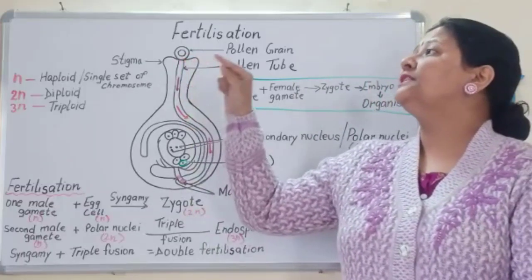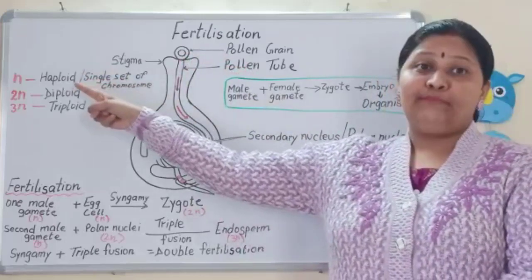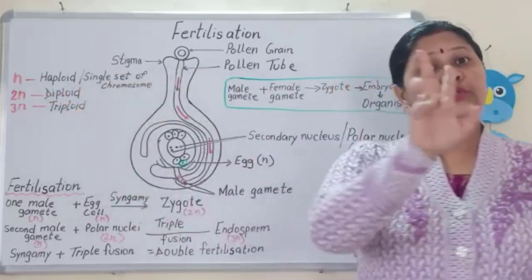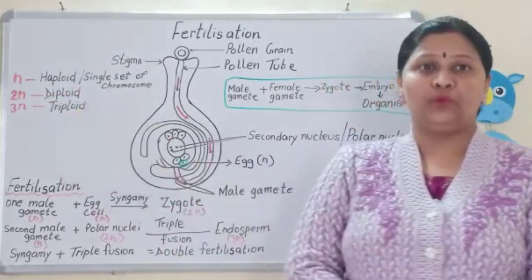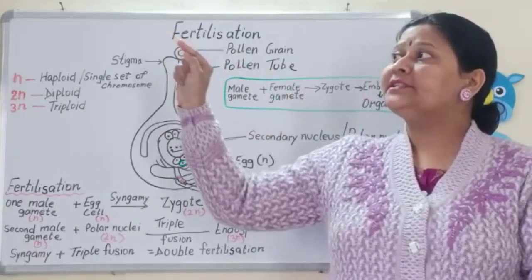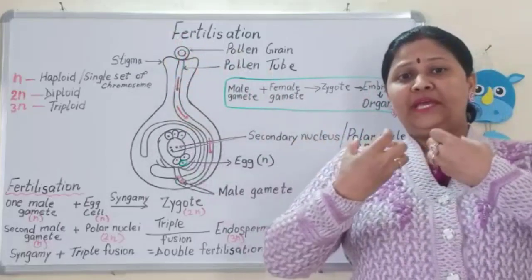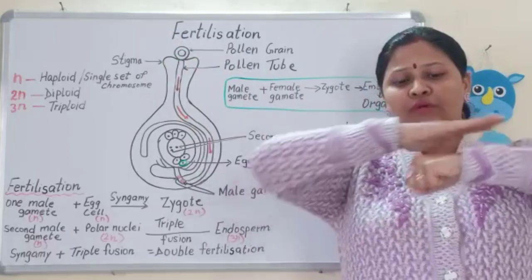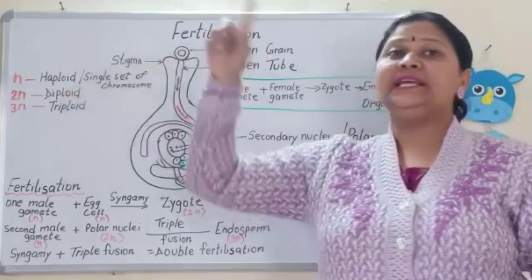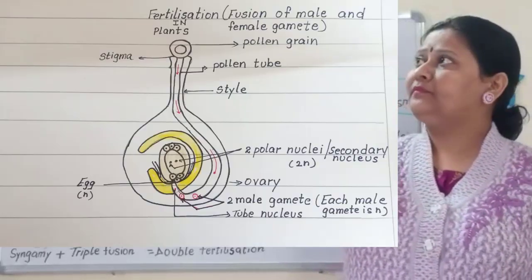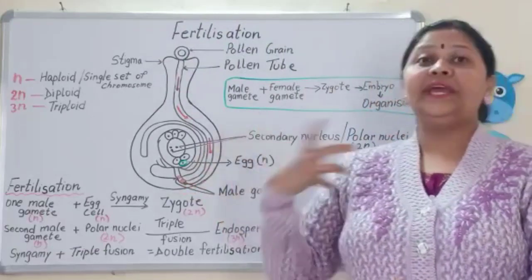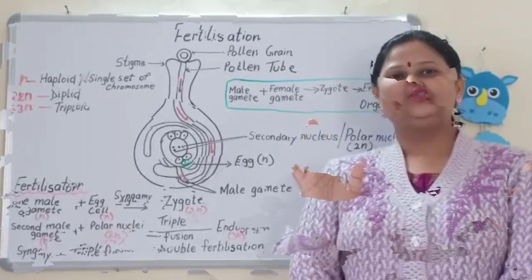The polar nuclei is written as 2N. Why 2N? N is haploid — a single set of chromosomes. 2N is diploid — two sets. And 3N is triploid. The polar nuclei is 2N because two cells did not separate during division — they remained attached to each other. So one cell contributes N and the other contributes N, making the polar nuclei 2N. The egg cell is N — haploid.